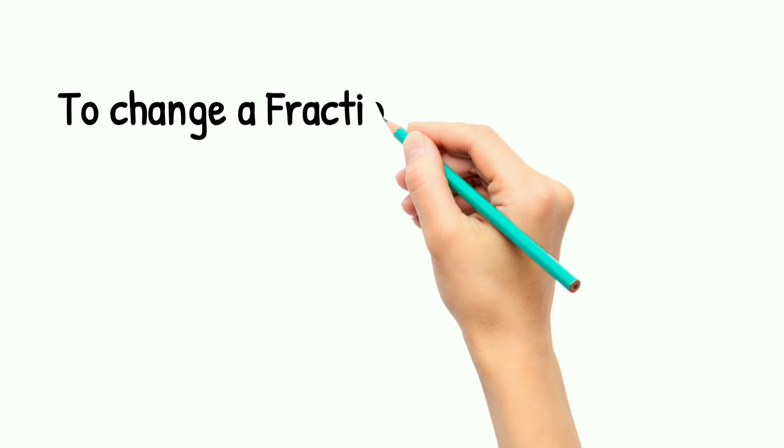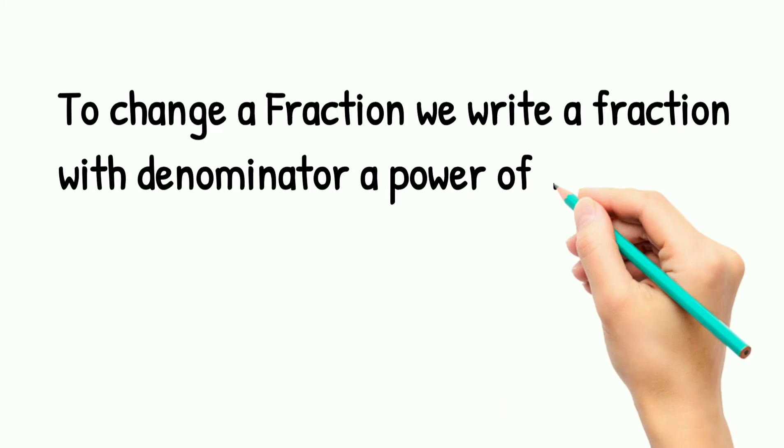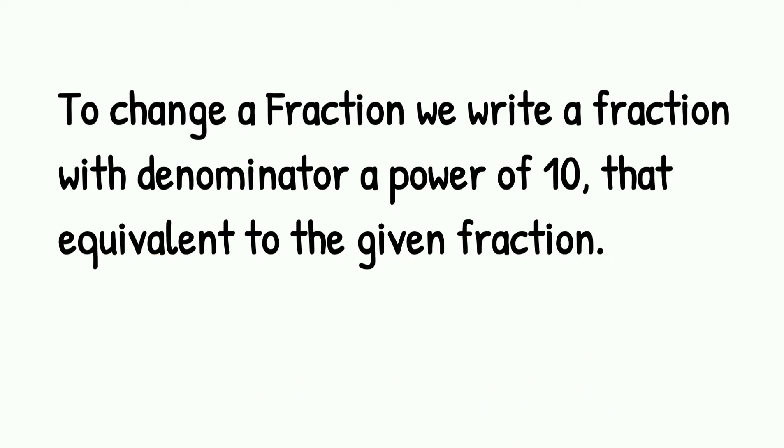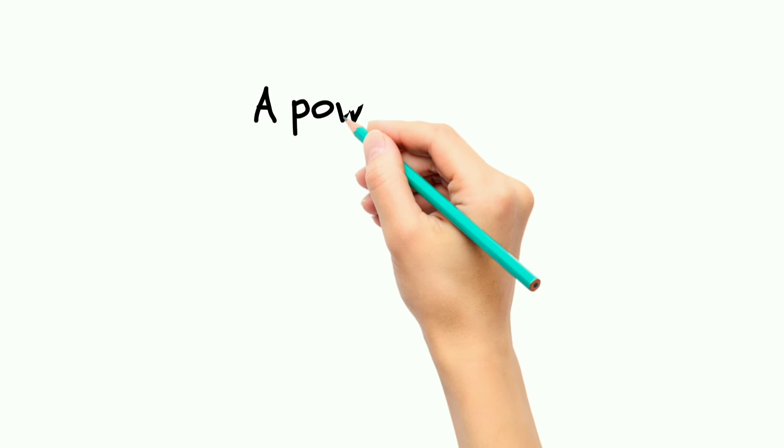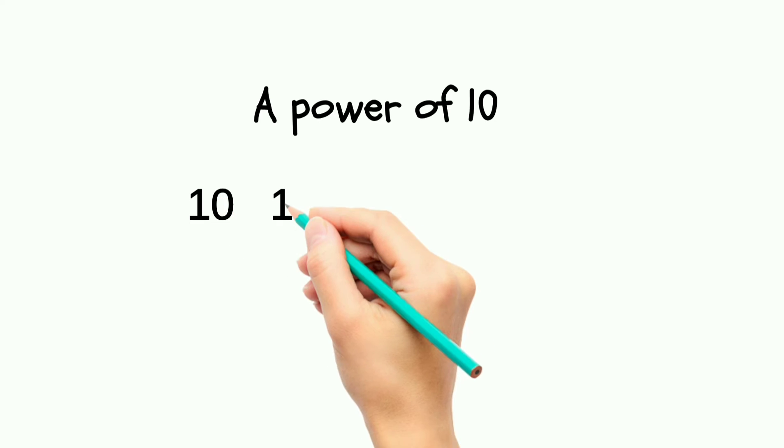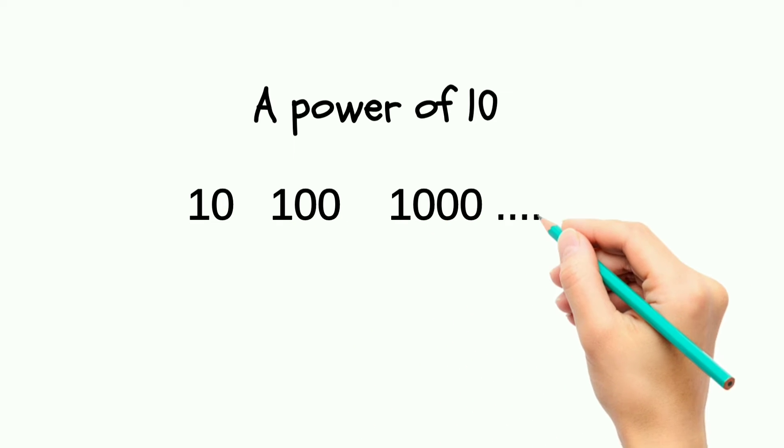In the second method, we have to convert the denominator with any power of 10. Or even if the fraction is equivalent, the fraction's denominator is equivalent to make the power of 10. If it has a conversion, then we use this type of method to make the decimals. Just two things we have to know about that. What is power of 10?